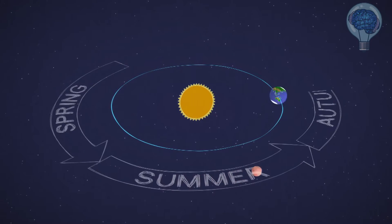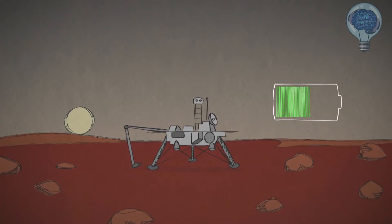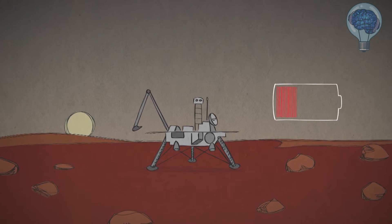That longer year means longer seasons too. Over extended Martian winters, the shorter days and reduced sunlight mean that solar-powered spacecraft sometimes have to carefully conserve their energy.